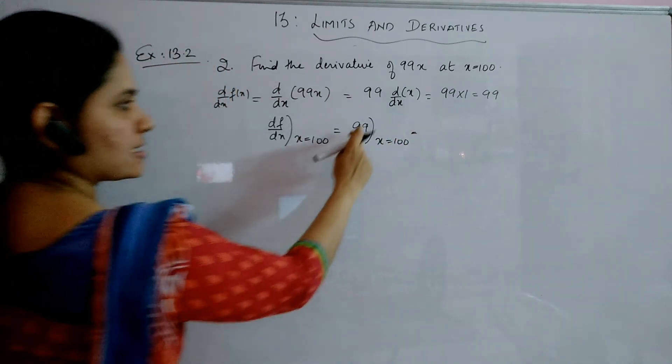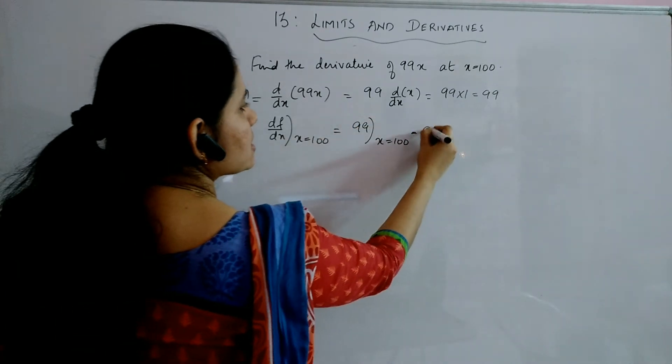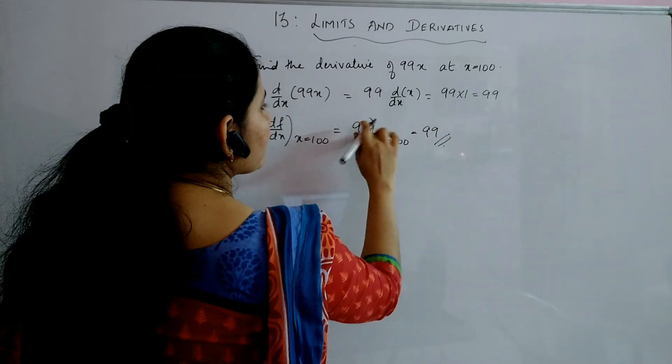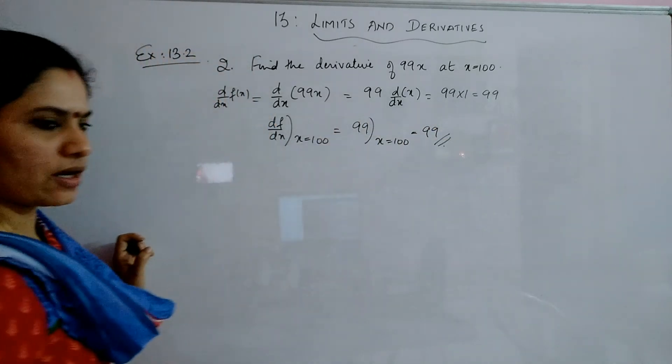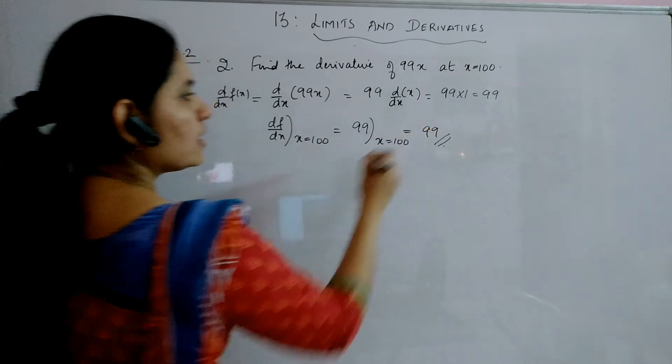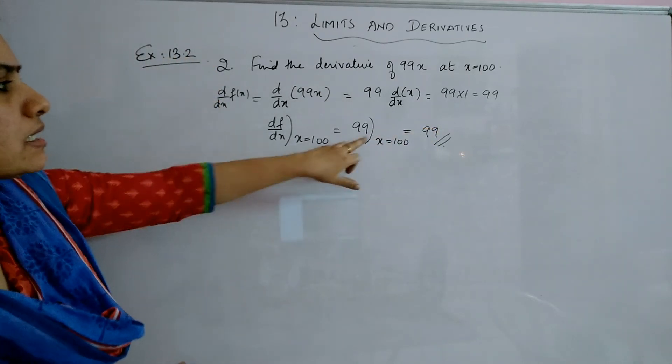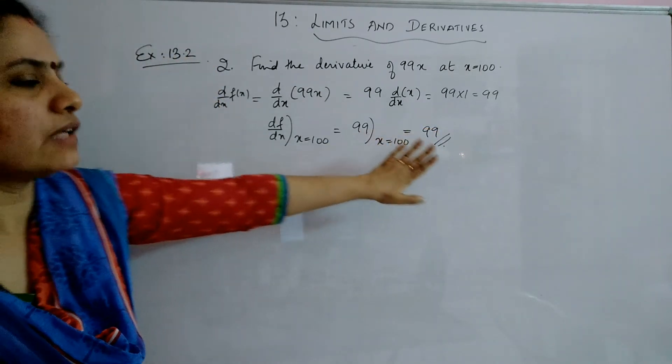No, you don't have any term like x there. That means the answer is not changing. It will be 99 only at x equal to 100 also. Understood? So if you don't have any x term in the answer, the answer will not alter.